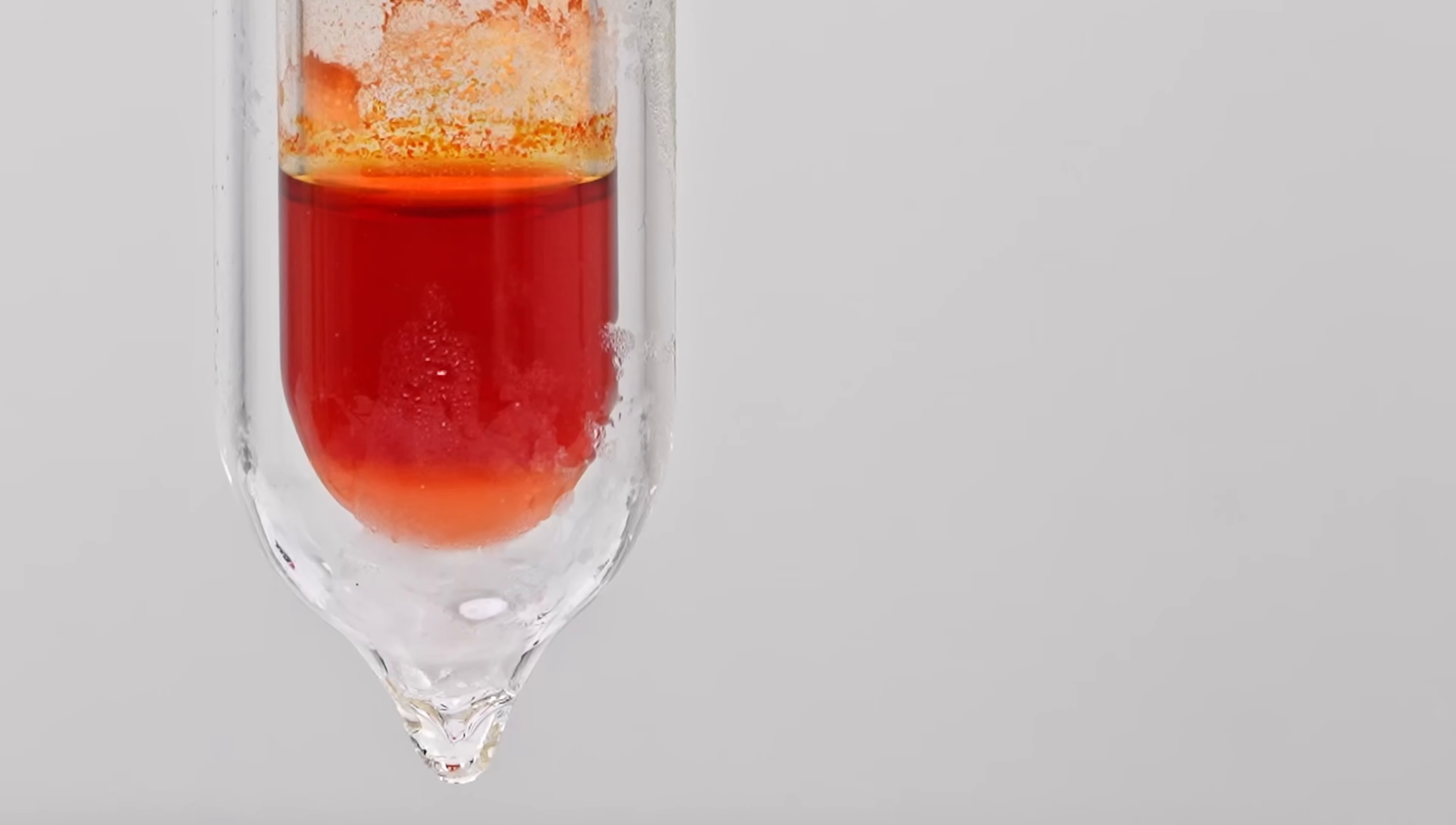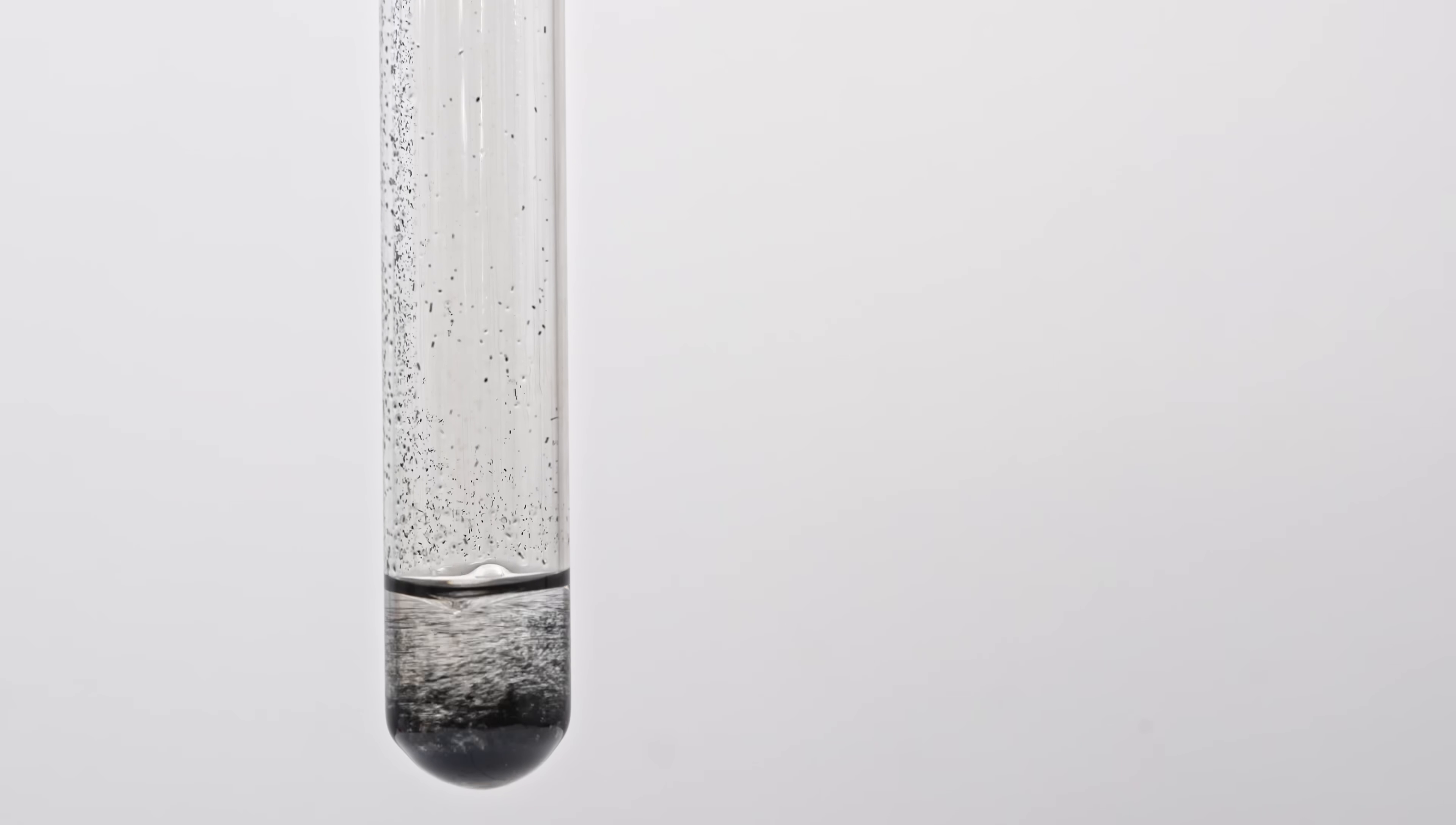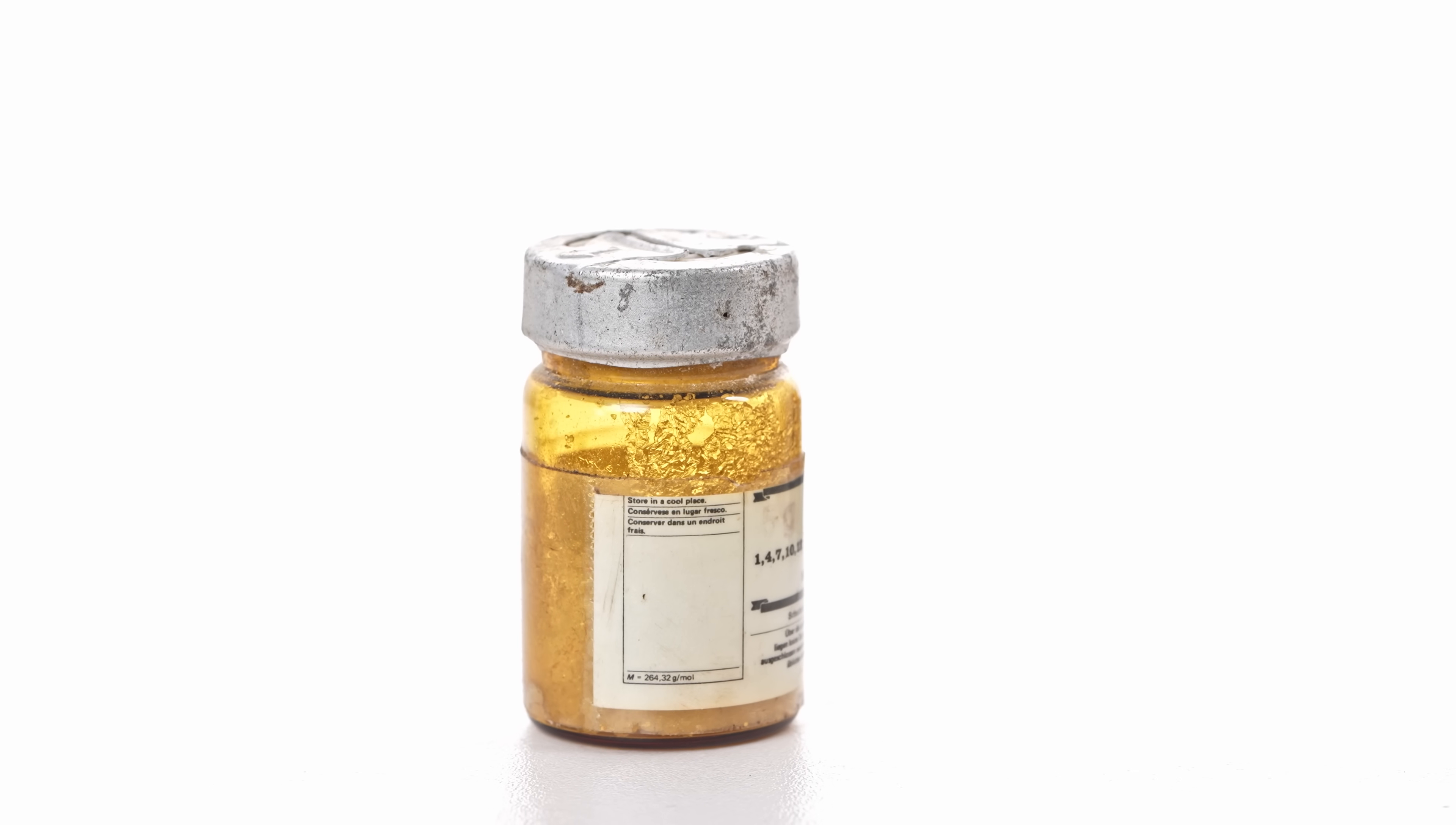This next test tube contains benzene, and now I'm adding some potassium permanganate to it. As you can see, nothing happens. That's because potassium permanganate is a polar ionic compound, while benzene is a non-polar solvent. The permanganate simply sinks without dissolving or reacting.